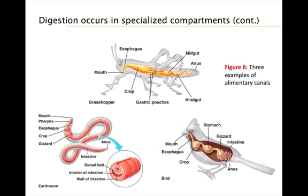Most animals have an alimentary canal, a digestive tract with two openings: a mouth and an anus. Food entering the mouth usually passes into a pharynx or throat. Depending on the species, the esophagus may channel food to a crop, gizzard, or a stomach. A crop is a pouch-like organ in which food is softened and stored. Stomachs and gizzards may also store food temporarily, but they are more muscular and churn and grind the food. Chemical digestion and nutrient absorption occur mainly in the intestine. Undigested material is expelled through the anus. Figure 6 shows examples of three types of alimentary canals.